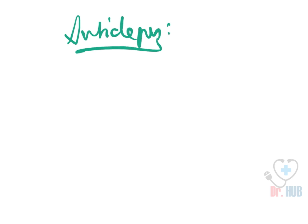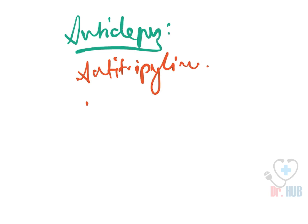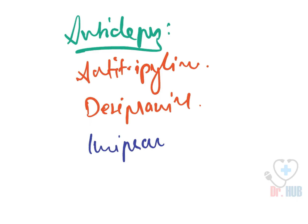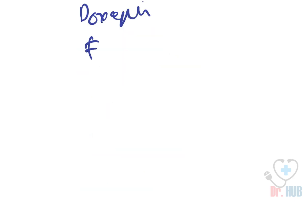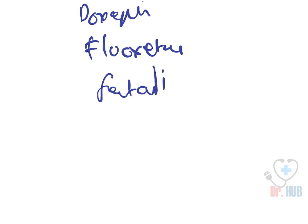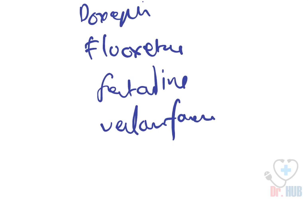To answer the first question — the antidepressants leading to QT prolongation and torsades de pointes are: amitriptyline, desipramine, imipramine, doxepin, fluoxetine, sertraline, and venlafaxine.